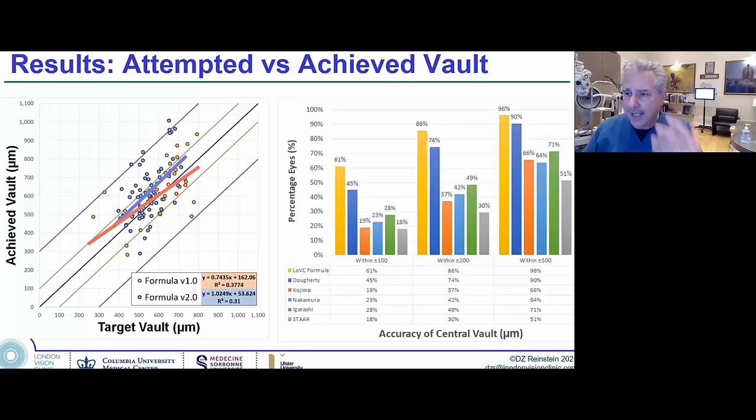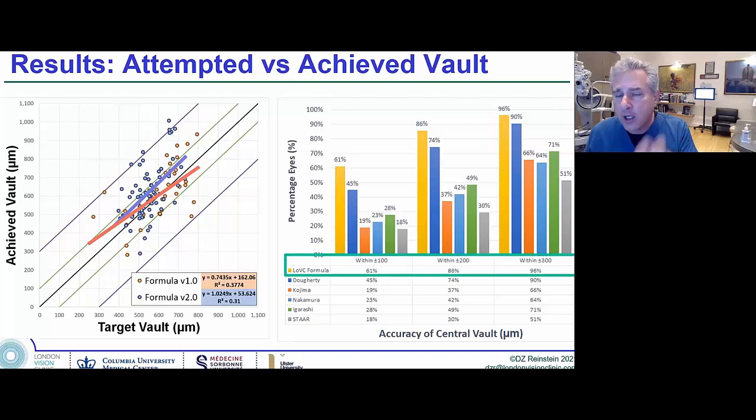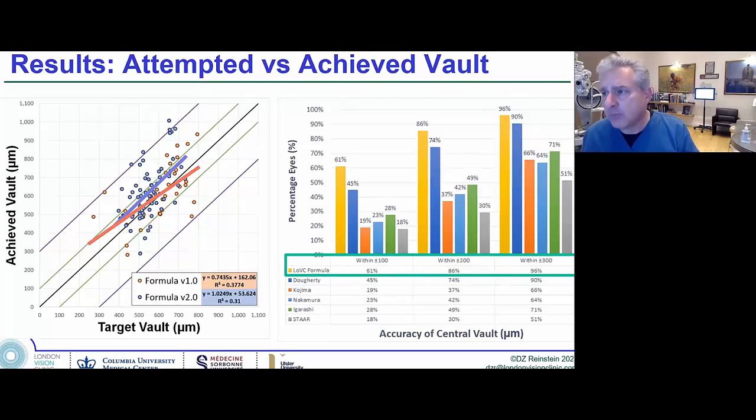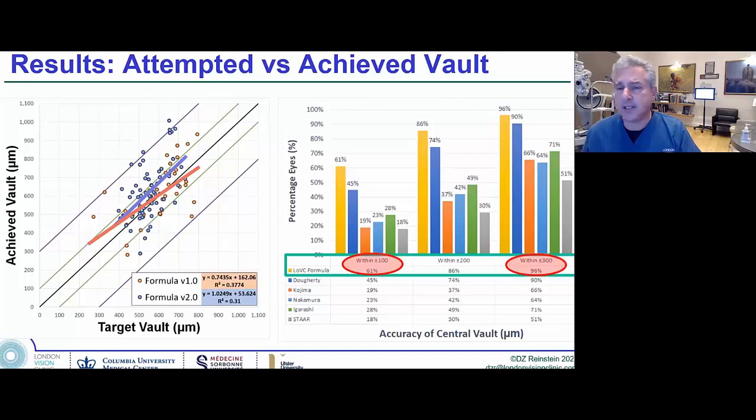Here's the analysis of within a hundred, within 200 and within 300. I want to point this out. With direct measurements in the posterior chamber from high frequency ultrasound robotic scanning, we're getting 61% of the eyes within a hundred microns of intended vault. Remember one hair is a hundred microns. 86% within 200 and almost all of the eyes within 300 microns of the intended vault. Compared to the others, clearly this is an order of magnitude better.